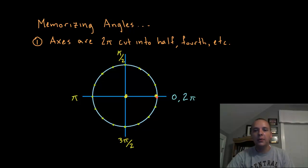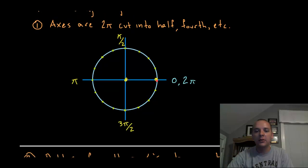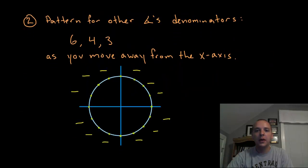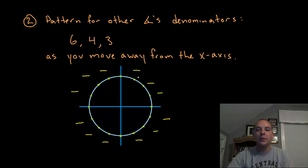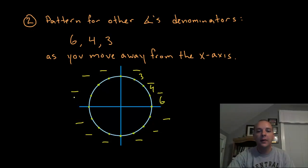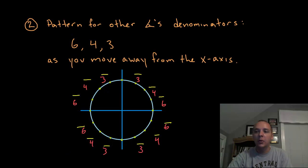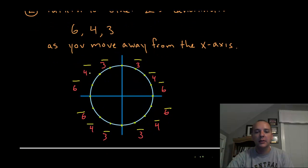From there we have to focus our attention on the middle angles. There are 3 in each of the 4 quadrants, and there's a little pattern to those as well. The denominators all have a 6, 4, or 3 respectively. The pattern goes 6, 4, 3 as you move away from the x-axis vertically, and likewise 6, 4, 3 in the lower two quadrants below the x-axis. So all denominators are 6, 4, or 3.